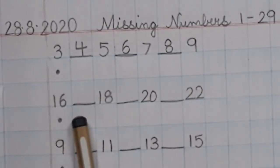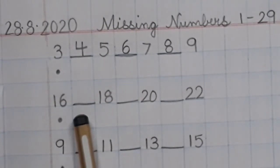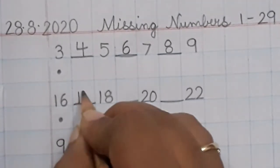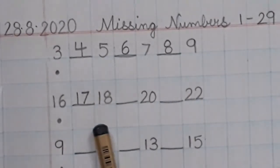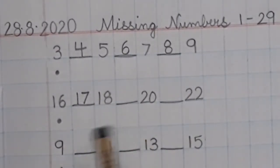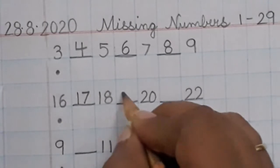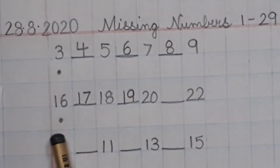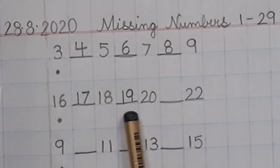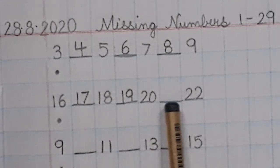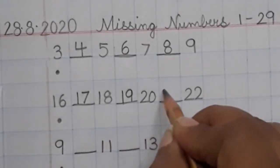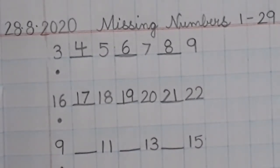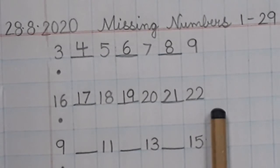16, 17, 18. What comes after 18? 16, 17, 18, 19, 20, 21, and 22. So again I have finished.